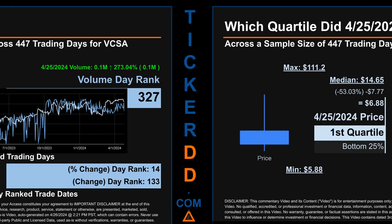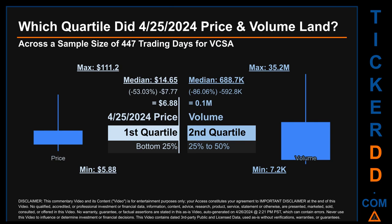Hello, my name is Maria. Which quartile did April 25, 2024 price and volume land in, across a sample size of 447 trading days? The maximum end-of-day price for VCSA was $111.20 while the minimum was $5.88. Within that price range, April 25's price of $6.88 landed within the first quartile, meaning it was within the bottom 25 percent of all sampled end-of-day prices. The day's volume landed within the second quartile — the 25 to 50 percent range — which saw a max daily volume of 35.2 million and a minimum of 7,200.